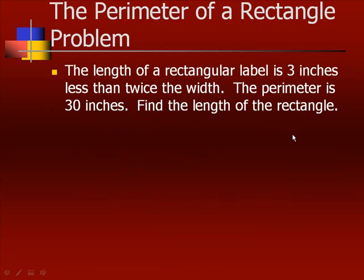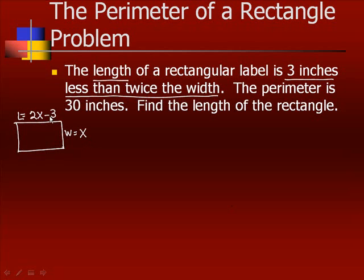Example 2 is the perimeter of a rectangle problem. The length of a rectangle is 3 inches less than twice the width. What I found helps on these is go ahead and draw your rectangle. It asks us find the length of the rectangle. And normally, if they say find the length, then we're going to let length be x. But in this problem, it says the length is 3 inches less than twice the width. So if we let width be x, then we can set up the length in terms of the width, which would be twice the width minus 3.